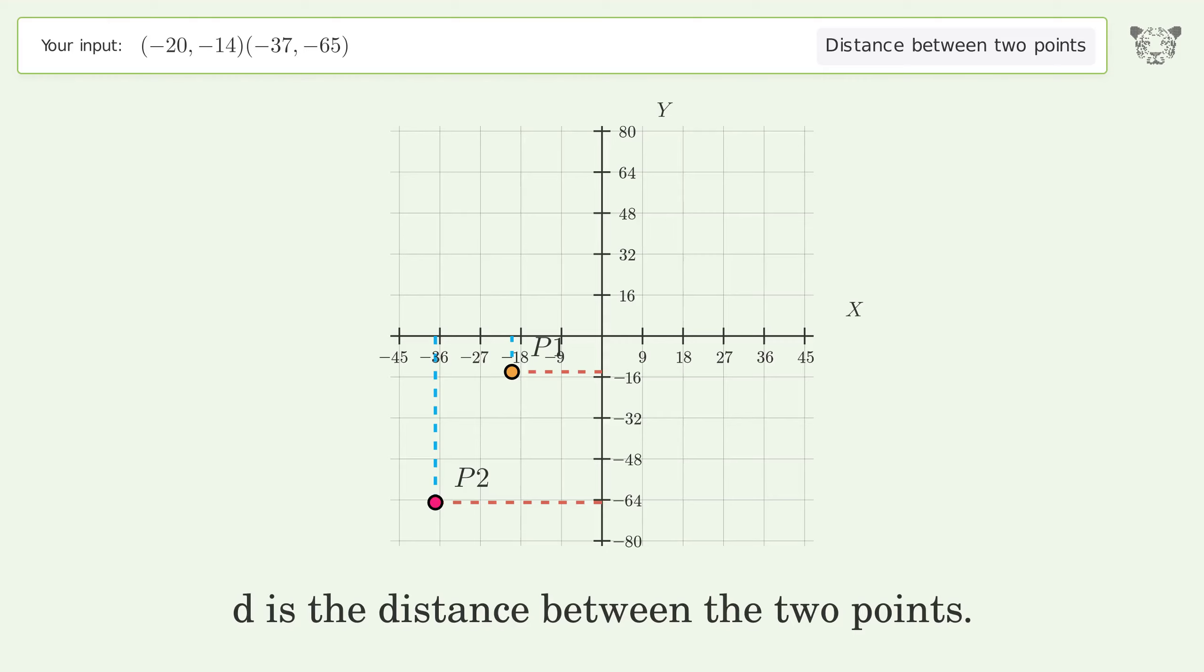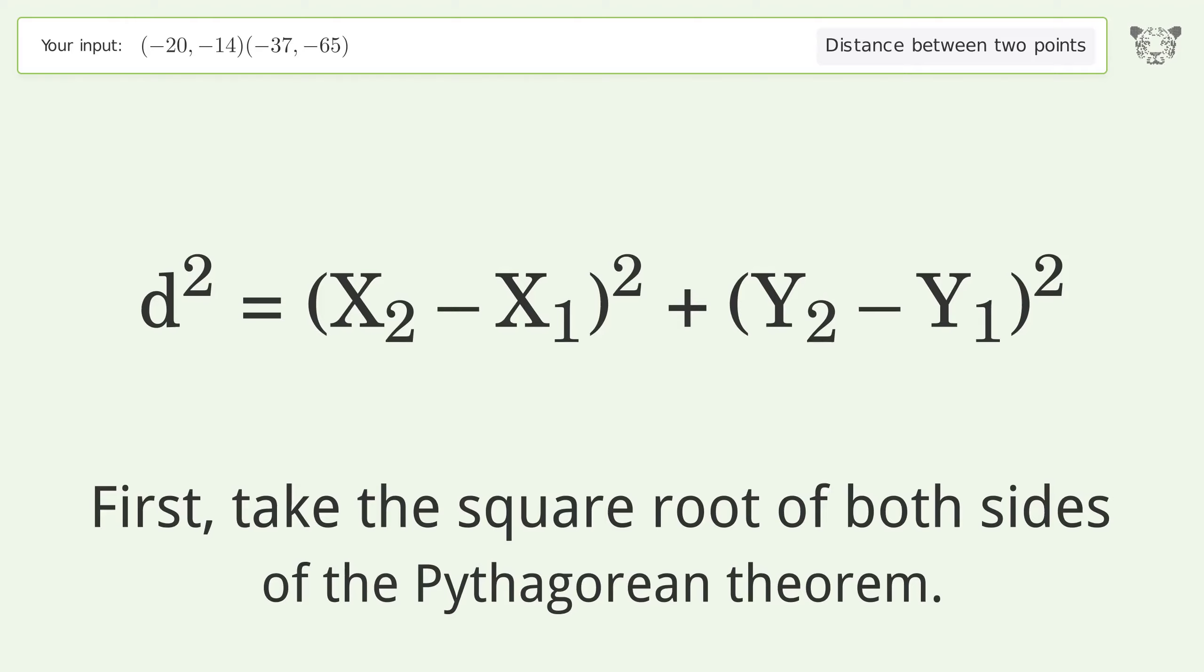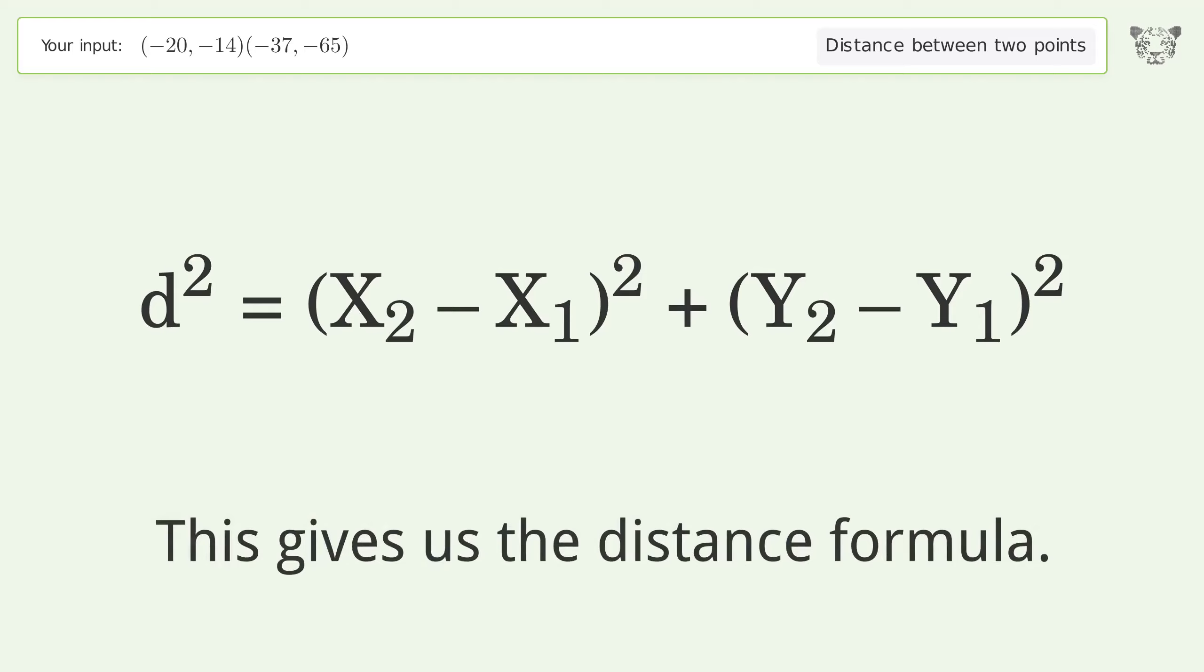d is the distance between the two points. First, take the square root of both sides of the Pythagorean theorem. This gives us the distance formula.